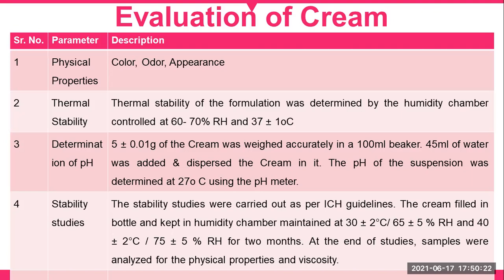Regarding evaluation of the cream, we have different parameters. Physical properties include color, odor, and appearance. Thermal stability can be checked for the formulation and is determined using a humidity chamber controlled at 60 to 70 percent relative humidity and 37 degrees centigrade temperature plus or minus 1. For determination of pH, 5 grams of cream are taken in a 100 ml beaker, 45 ml of water is added, and the cream is dispersed. The pH of the suspension is determined at 27 degrees centigrade using a pH meter.